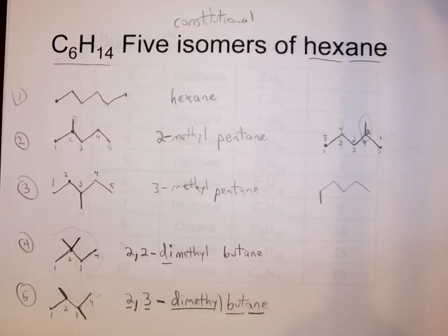These are the five unique isomers. If you try to draw anything else with six carbons attached and saturated with hydrogens, you'll get one of these molecules. It's that simple.